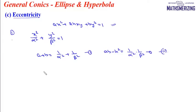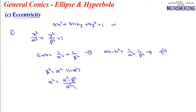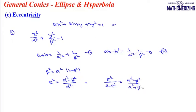Now we know that β² = α²(1 - e²). So we can write e² = (α² - β²)/α². Using componendo and dividendo, we can write e²/(2 - e²) = (α² - β²)/(α² + β²).